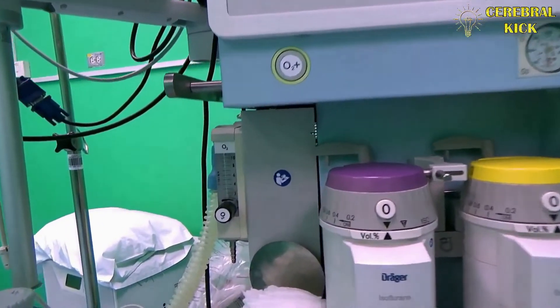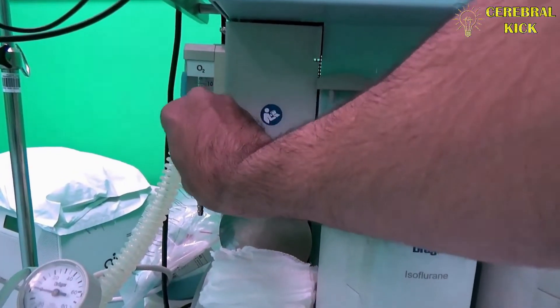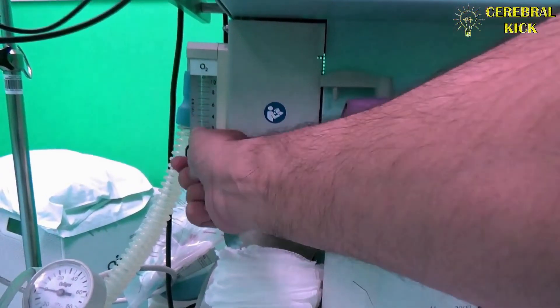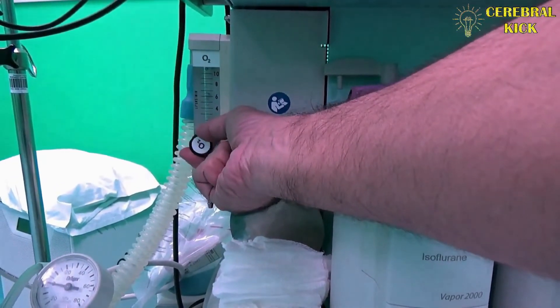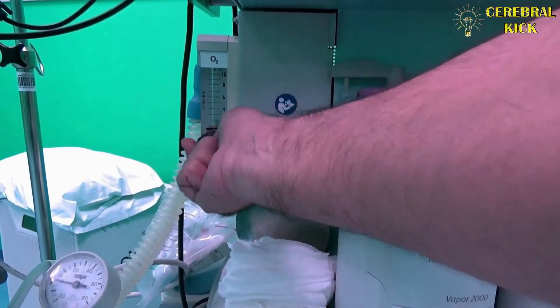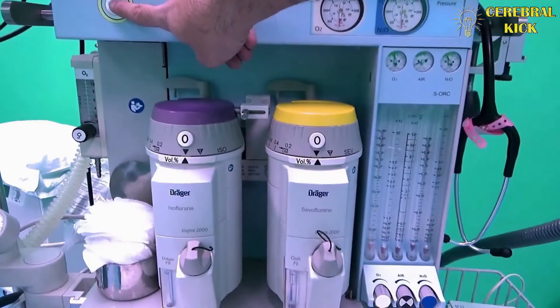You can see this is the auxiliary oxygen port. It can be used even when the machine is off because it has a direct connection, so it is free of electric power.